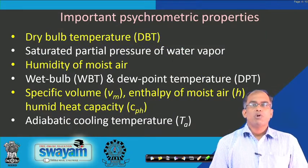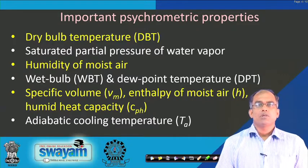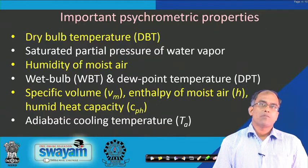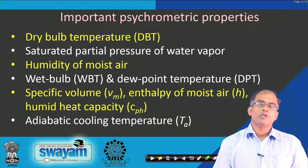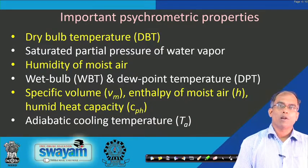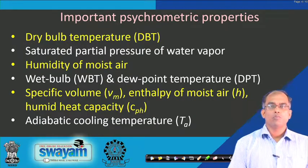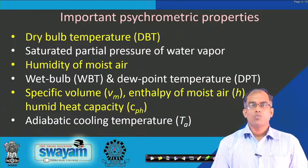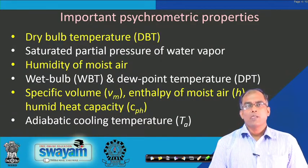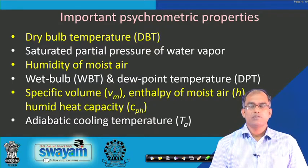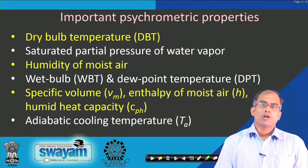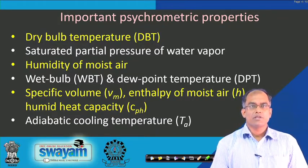The important psychrometric properties that must be known are: dry bulb temperature (DBT), saturated partial pressure of water vapour, humidity of moist air, wet bulb temperature, dew point temperature, specific volume, enthalpy of moisture, humid heat capacity, and adiabatic cooling temperature. These are the main psychrometric properties one must understand in the study of humidity and psychrometry.